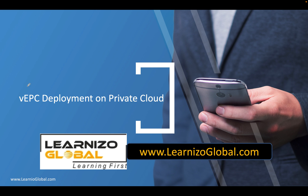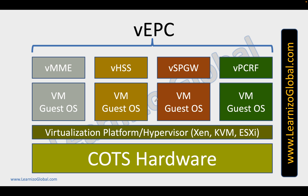The vEPC, or virtual EPC, can be deployed on a private cloud. In this scenario, we will have some generic hardware, typically referred to as COTS hardware — commercial off-the-shelf hardware. On top of that, we will have some kind of abstraction layer, which is typically a virtualization platform or some kind of hypervisor. On top of that, we have virtual machines, and each of those virtual machines will host specific applications such as virtual MME, virtual HSS, virtual SPGW, or virtual PCRF.